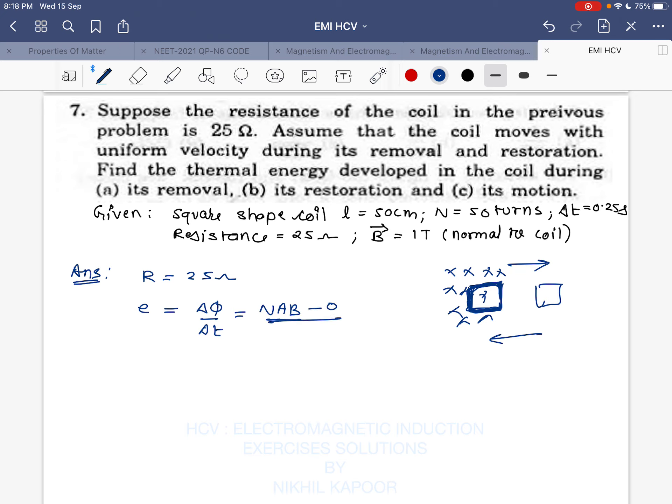This whole thing is happening in a time interval of 0.25 seconds. Number of turns are 50, area of the square would be side squared. As each side is 50 centimeters, it will be 0.5 squared. Magnetic field is 1 tesla upon 0.25, so it will be 50 into 0.5 squared - 0.25 upon 0.25, this will get cancelled.